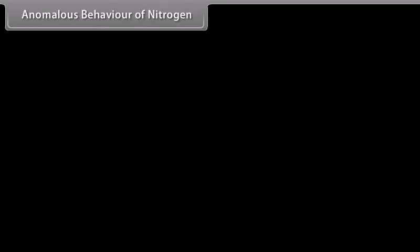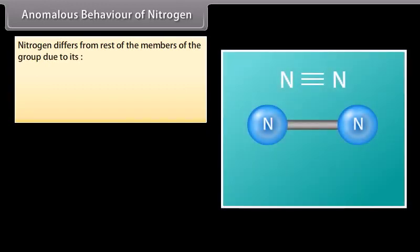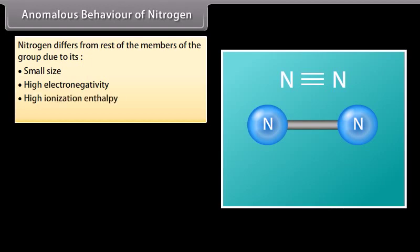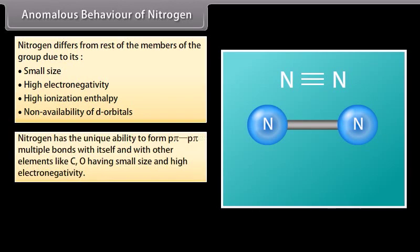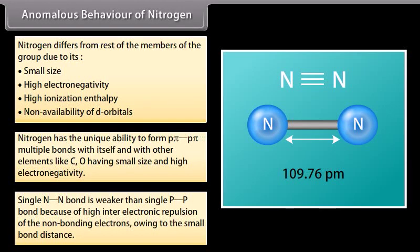Anomalous behaviour of nitrogen: Nitrogen differs from the rest of the group members due to its small size, high electronegativity, high ionisation enthalpy, and non-availability of d-orbitals. Nitrogen has the unique ability to form π–π multiple bonds with itself and with other elements like carbon and oxygen. Thus nitrogen exists as a diatomic molecule with a triple bond, having high bond enthalpy of 941.4 kJ/mol. The single N–N bond is weaker than the single P–P bond due to higher inter-electronic repulsion of non-bonding electrons at the small bond distance.